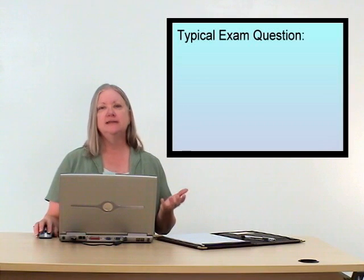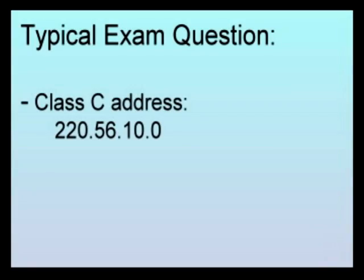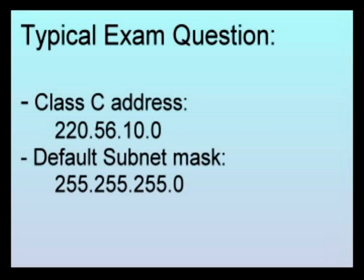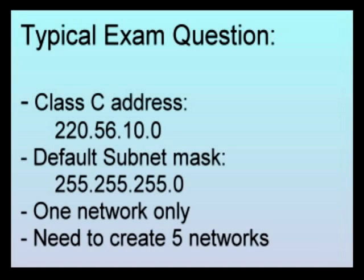Let's take a look at a typical exam question that you might get. It will probably give you a Class C address — these are the most common that are still available. So we'll take a look at 220.56.10.0. Remember, for TCP/IP version 4, the default subnet mask for this is going to be 255.255.255.0. How many networks does that give us? One. A typical exam question might ask you to create five networks out of this address.